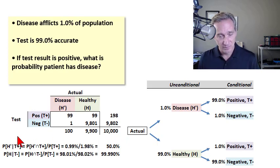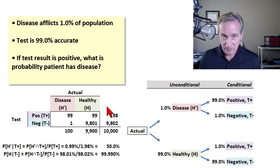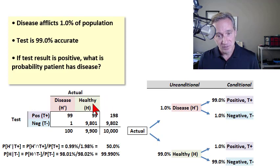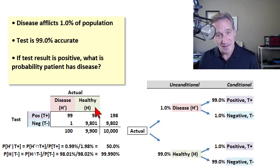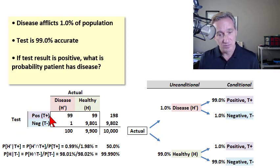This problem involves two variables. First, whether the person actually has the disease or not — following Miller's Chapter 6 notation, a healthy person is denoted H (colored green), and a person who has the disease is not-H (colored red). Second, the test result, which is either positive or negative: T+ or T−.